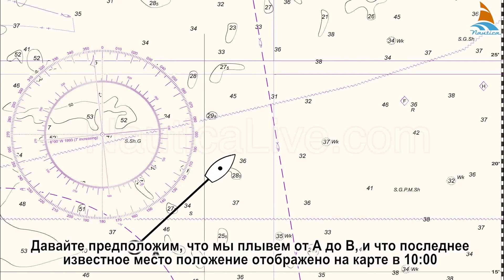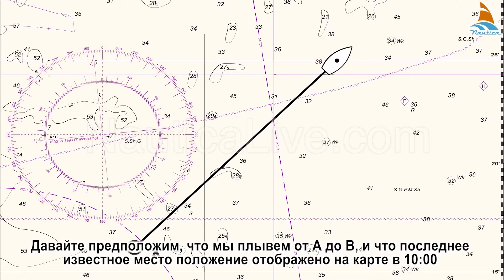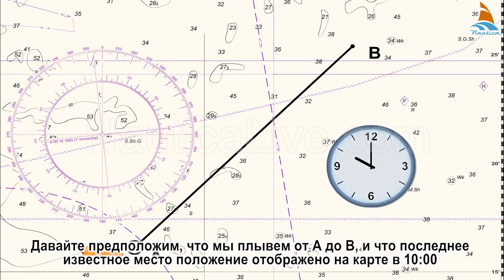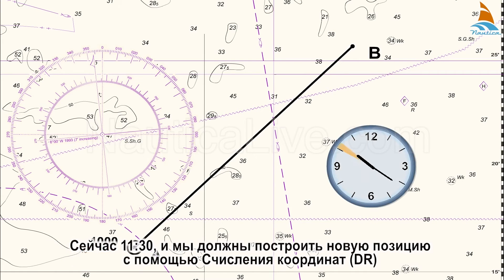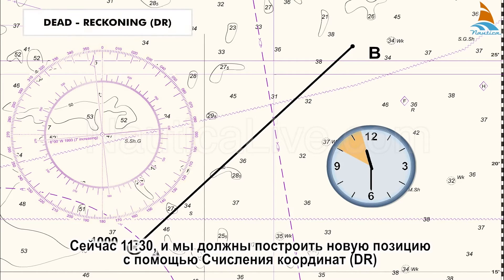Let's assume that we're sailing from A to B, and that A is the last fixed position plotted on the chart at 10 o'clock. Now it's 11:30, and we have to plot a new position using the dead reckoning, DR.